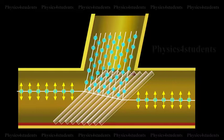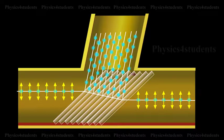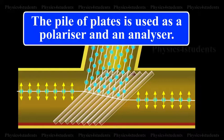The larger the number of surfaces, the greater is the intensity of the reflected plane polarized light. The pile of plates is used as a polarizer and an analyzer.